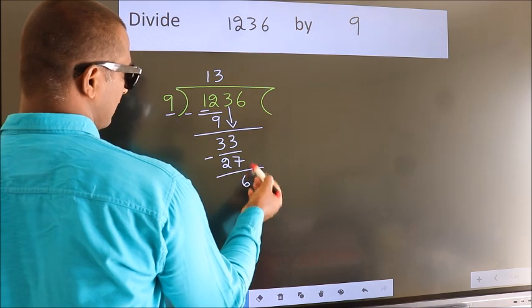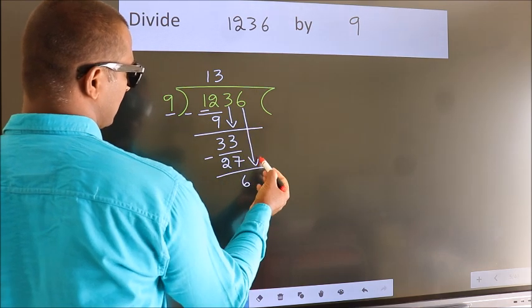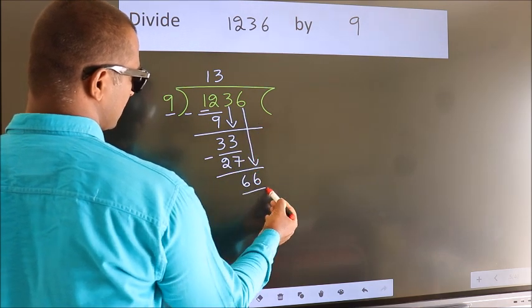After this, bring down the beside number. So, 6 down, giving us 66.